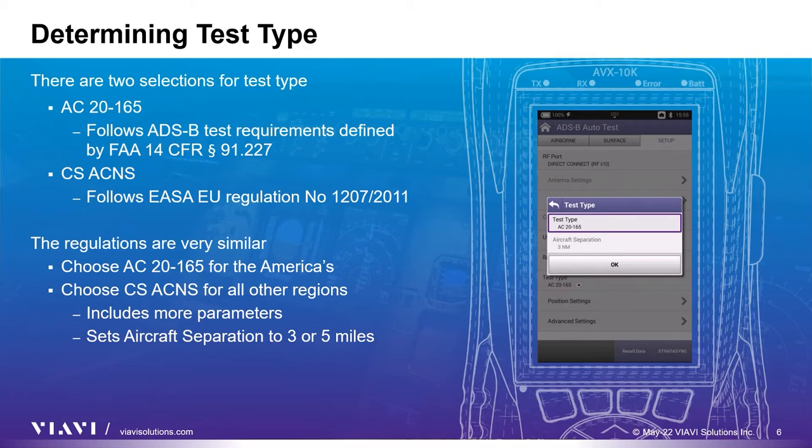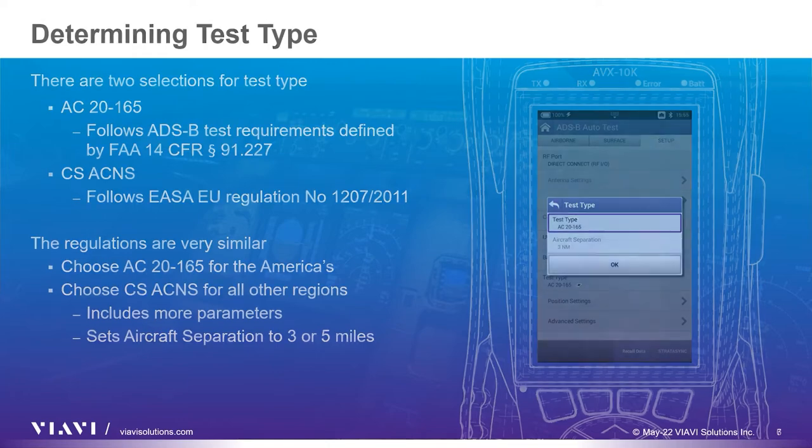Choose AC20-165 for the Americas. All other locations use the EASA CSACNS test requirements with desired aircraft separation of 3 or 5 nautical miles.